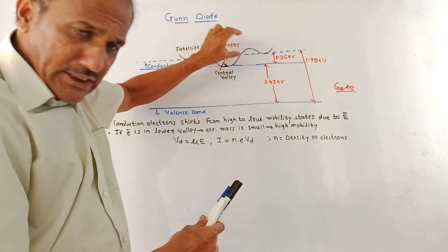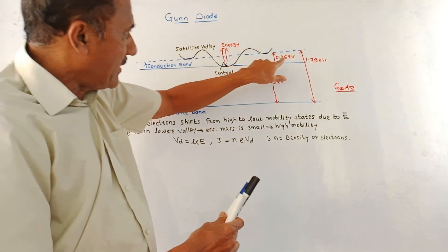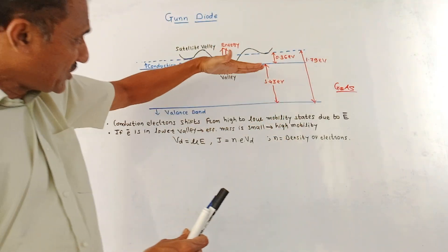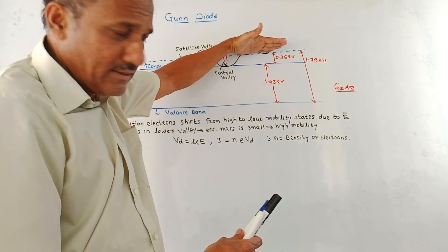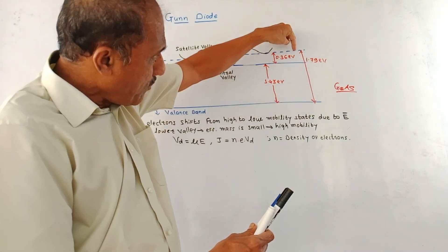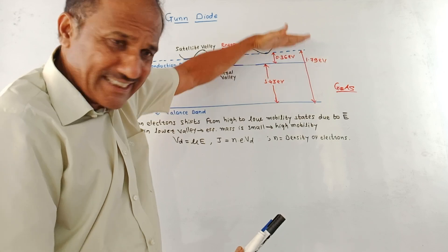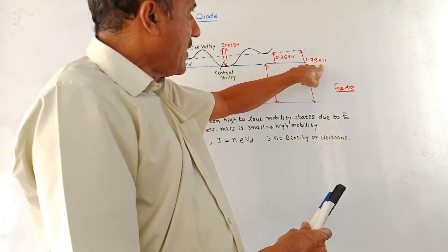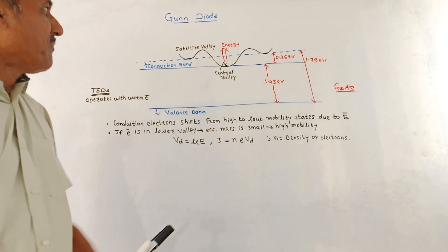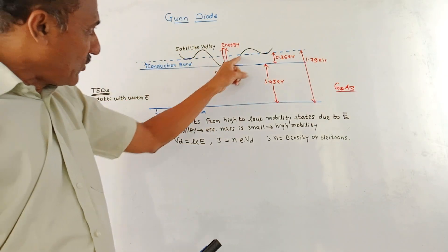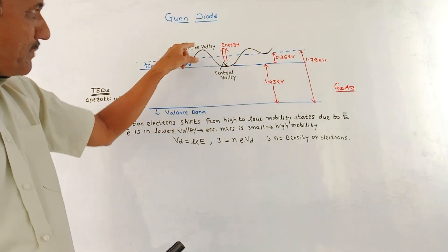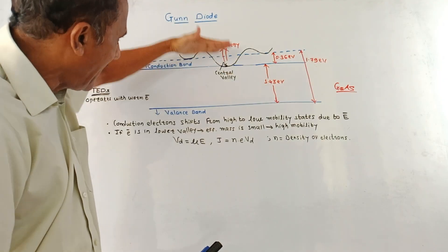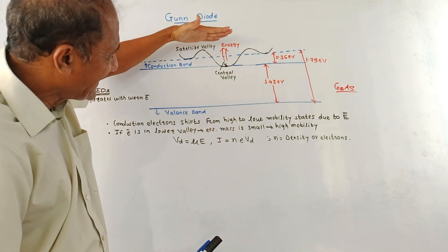There is a specific width of this conduction band, which is 0.36 eV. There are sub-conduction bands between these levels, and the topmost conduction band is at the energy level of 1.79 eV. The curved line shows the structure of the Satellite Valley. So the lower portion in the conduction band is the Central Valley, and the top portion is the Satellite Valley.